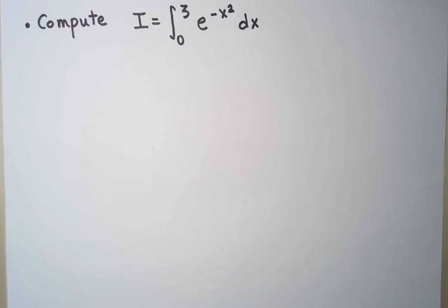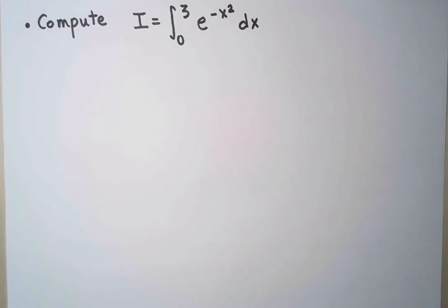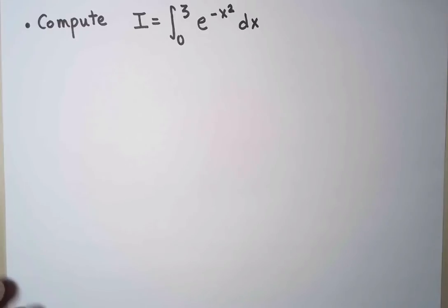So instead, I'm going to replace this function with a power series and integrate that. I'm going to begin by writing the exponential as a Maclaurin series, because that's one I already know.